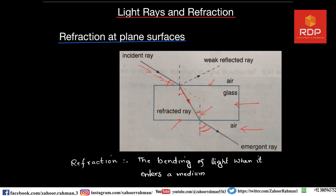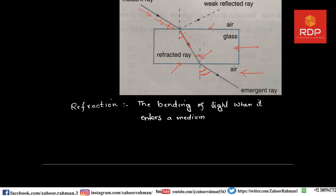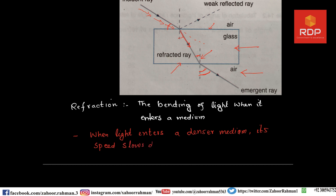One important property: when light enters a denser medium, its speed slows down. Remember that when light enters from a rare medium to a denser medium, the speed of that light will be slow. First it is going at high speed but the glass is stopping it, and when you stop a fast-moving thing it will change its direction.